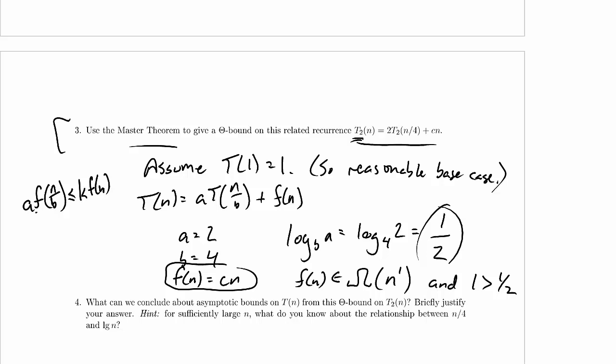So our regularity condition is a times f(n/b) has to be less than or equal to k times f(n) for some appropriate k less than one, sorry, less than or equal to one. So a is 2, b is 4, so we're looking at 2 times f(n/4). Well, f(n/4), that's just going to be c times n over 4. Over here f(n), that's just c times n.